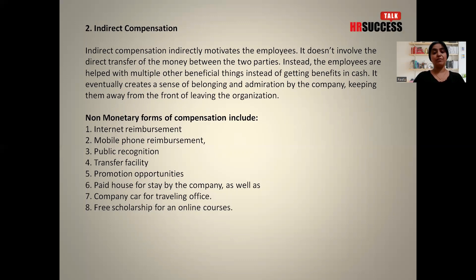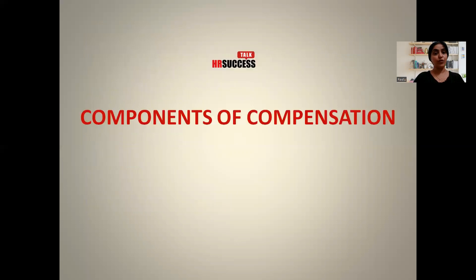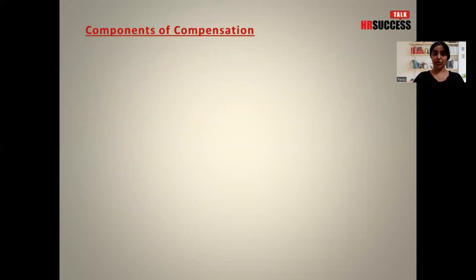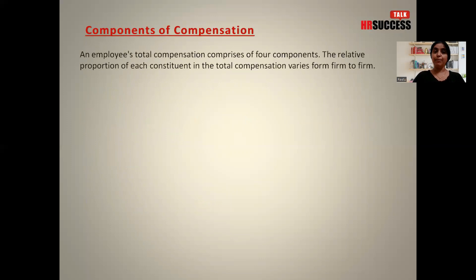So we have talked about the two types of compensation — direct, which is cash, and indirect, which is non-cash. Now let's look at the components of compensation. An employee's total compensation comprises four components, and the relative proportion of each constituent in the total compensation varies from firm to firm.